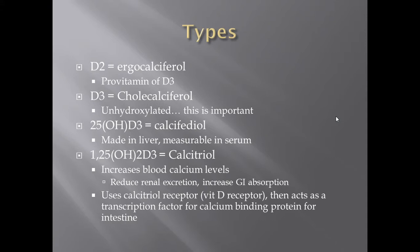As our body processes it, we're going to be transporting this D3 that we created in the skin through UV light, and we're going to be adding hydroxyl groups to it — adding OH groups to this vitamin D3. Our first stop is the skin. Next, that D3 is taken to the liver, where we place a hydroxyl group at the 25th position on D3, giving us 25-OH-D3. What's unique about this form is that it's the measurable form in the serum. So when you go to your doctor's office and they're testing for vitamin D deficiency, this is the serum measurable form.